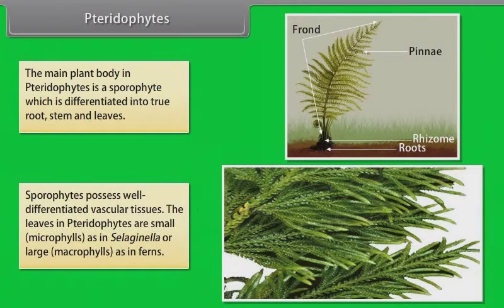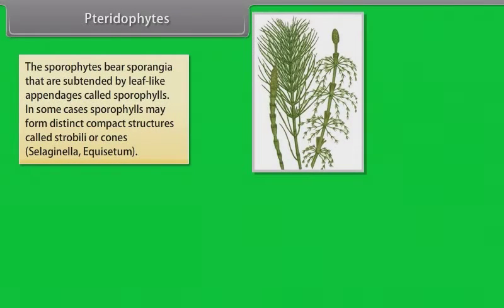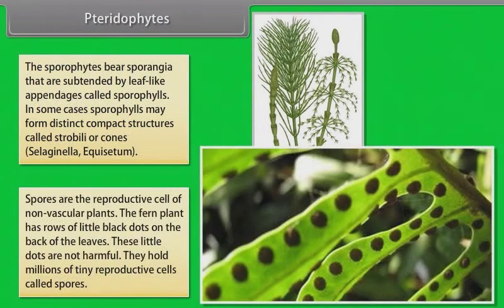Sporophytes possess well-differentiated vascular tissues. The leaves in pteridophytes are small, microphylls as in Selaginella, or large, macrophylls as in ferns. The sporophyte bears sporangia that are subtended by leaf-like appendages called sporophylls. In some cases, sporophylls may form distinct compact structures called strobili or cones, Selaginella, Equisetum.